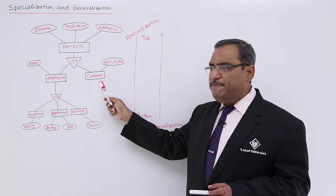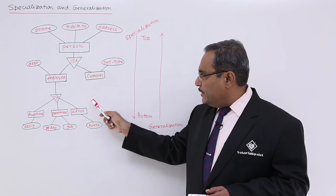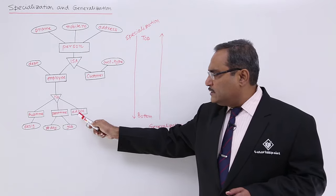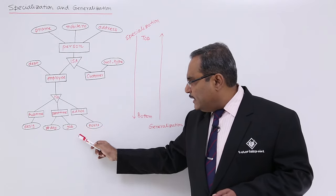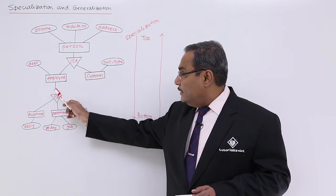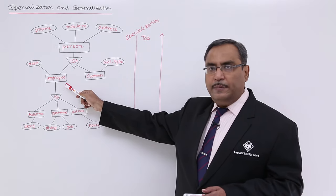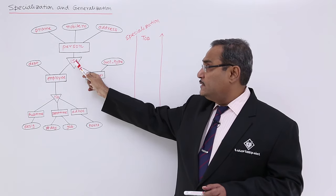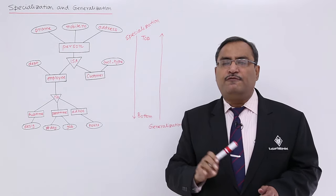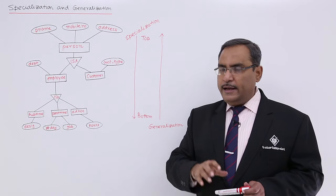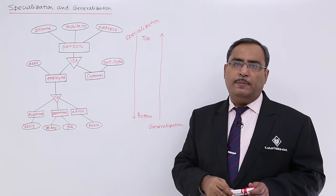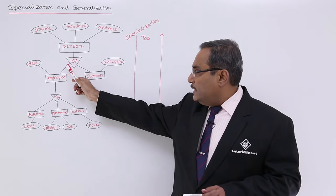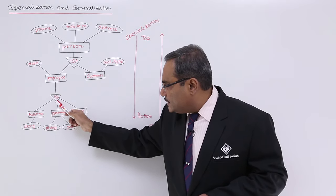The leaf entities in this particular tree — entities from which there is no 'is a' — are full-time, part-time, ad hoc, and customer. These are the leaf entities. This employee is having 'is a', so I shall not form any table against employee. This person is having 'is a', so I shall not form any table for person either. So this is my specialization.